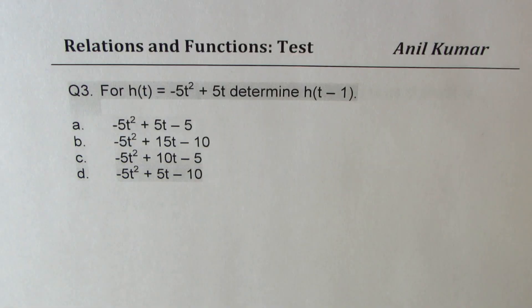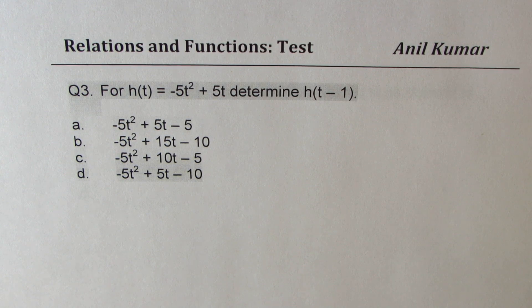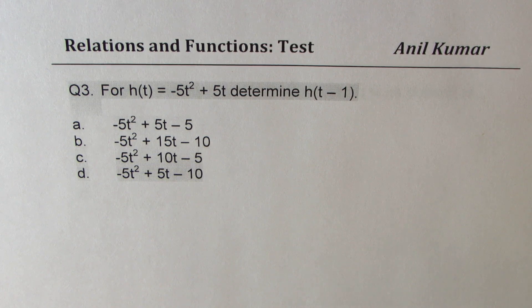Question number three: for h(t) = -5t² + 5t, determine h(t - 1). It's given in function notation — match the correct answer.